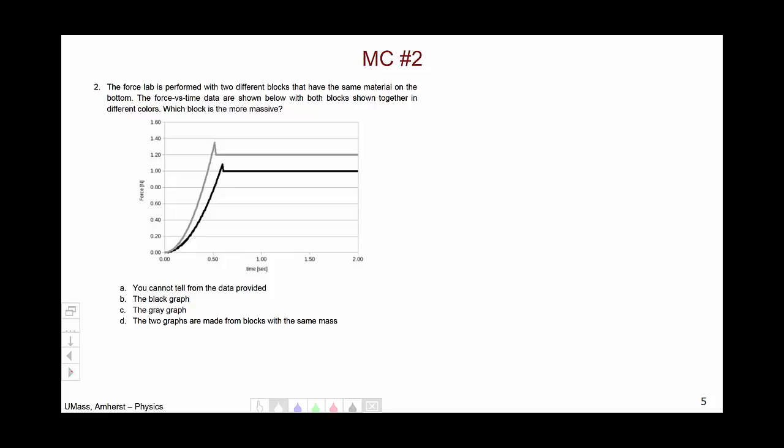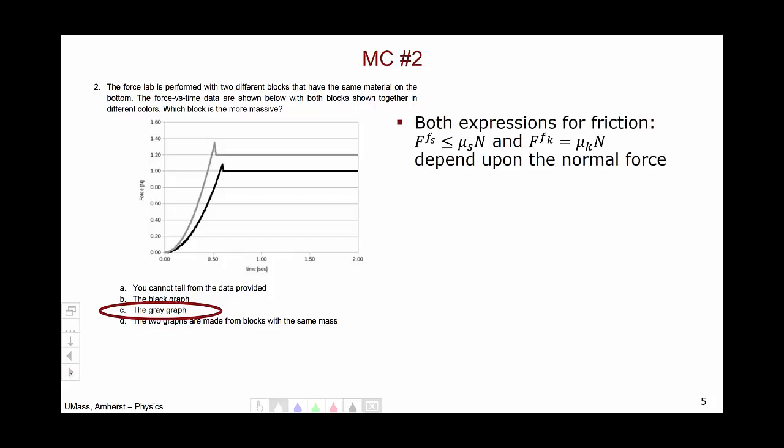The second multiple choice question involved the force lab and trying to determine which block had the higher mass. The correct answer was the gray graph. Both static and kinetic friction expressions that we discussed in class depend upon the normal force.